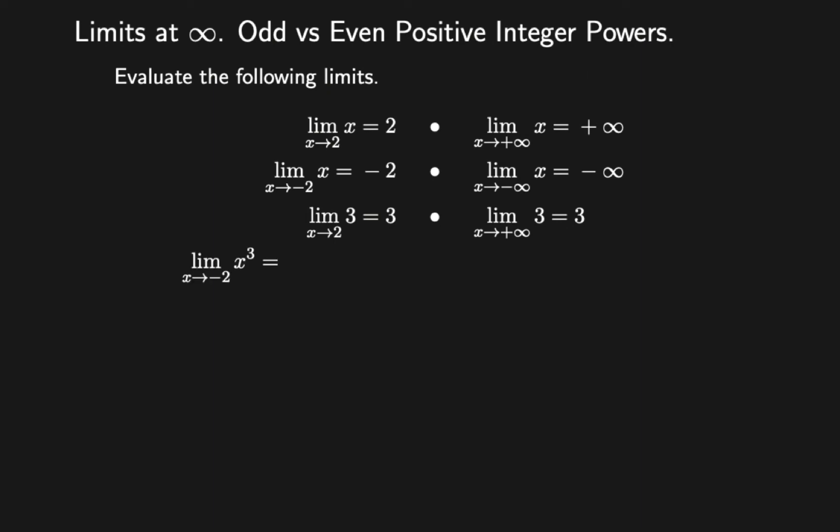Find the limit of x cubed as x approaches minus 2. Minus 2 to the power of 3 is equal to minus 8. If you have an odd positive integer power and you substitute negative numbers, you will get a negative number.